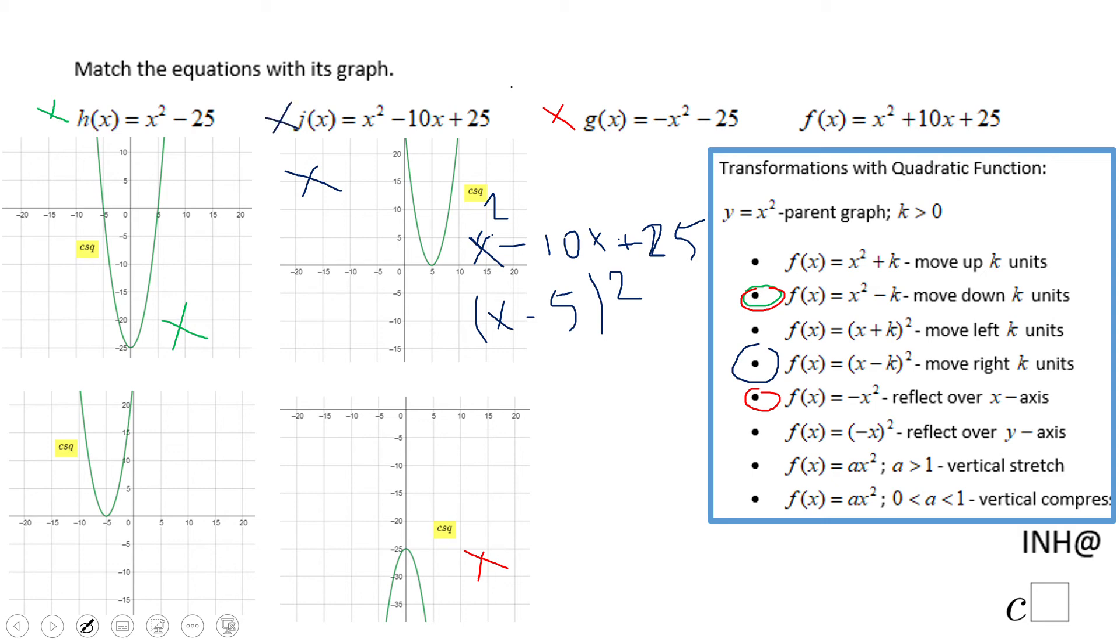We have this one, which obviously is going to go with the last graph. Again, we can factor out this trinomial. x² + 10x + 25 is going to be (x + 5)².